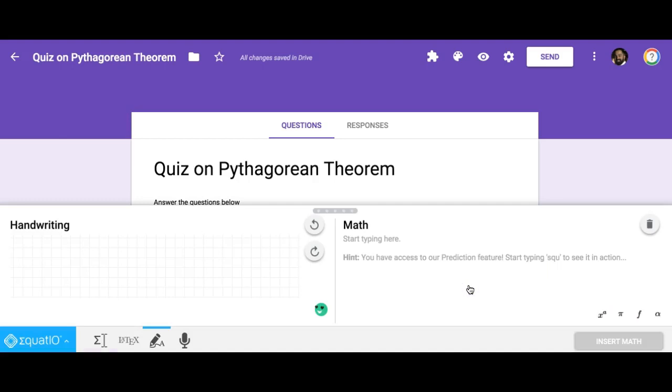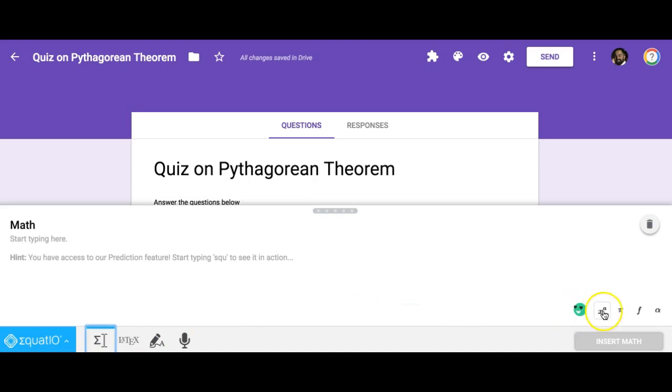So when I click there, I've got a few options. I've got an equation editor so I can decide that I want to actually type it in by clicking any one of these different options for the different math that is available.